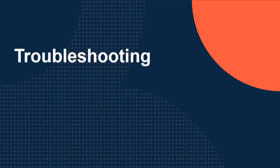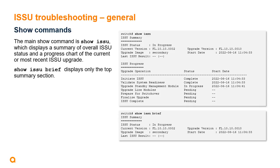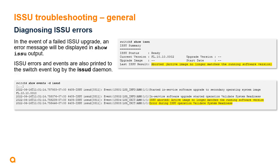Now let's go over some troubleshooting tools and tips. The main show command for ISSU is show issu, which displays a summary of overall ISSU status and a progress chart of the current or most recent ISSU software upgrade. Show issu brief displays only the top summary section. If an ISSU upgrade fails, an error message will be generated and displayed in the output of the show issu command. Any related ISSU errors or events are also printed to the switch event log by the ISSU-D software daemon.